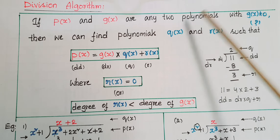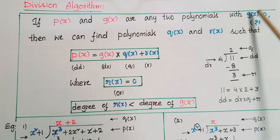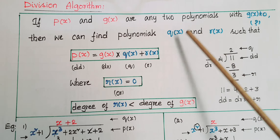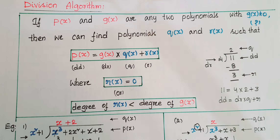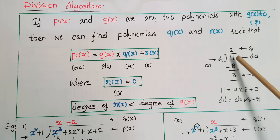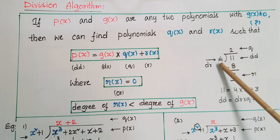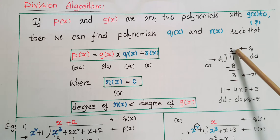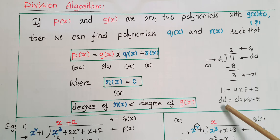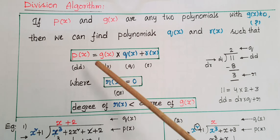If p(x) and g(x) are any two polynomials with g(x) not equal to 0, then we can find polynomials q(x) and r(x) such that p(x) = g(x)·q(x) + r(x). For example, if you take the number 11 and divide it by 4, you get quotient 2 and remainder 3, so 11 = 4×2 + 3. So dividend equals divisor times quotient plus remainder.